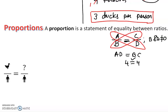With any application problem, you first read it carefully, check what is unknown, devise a plan, and then carry out the plan — and in that step you should recall the proportion concept. If you know three of the four values in a proportion — a, b, c, and d — you can clearly find the unknown fourth value.